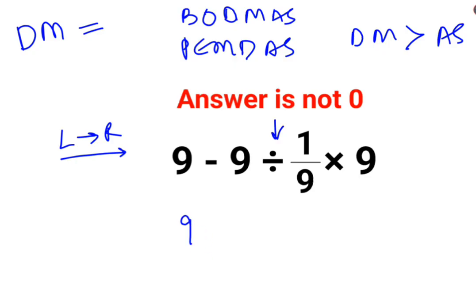So we keep 9 as it is, minus 9 divided by 1/9. Whenever there is a fraction involved in division, we follow the acronym KCF, where K stands for keeping the first number as it is, C stands for changing the division sign to multiplication, and F stands for flipping or taking the reciprocal of 1/9, which is 9 multiplied by 9.